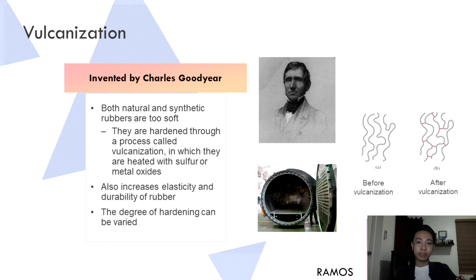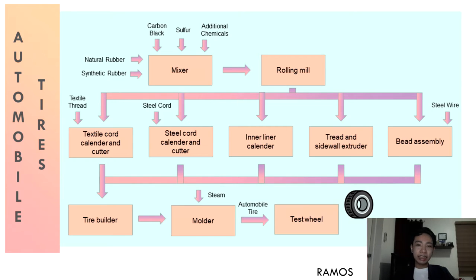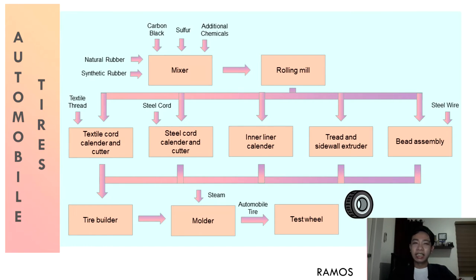The first step in the production of automobile tires is the mixing of raw materials. Both natural and synthetic rubber are used — natural rubber is the main component of the tread layers, while synthetic rubbers such as butadiene and styrene-butadiene rubber are used for other parts. As many as 20 different types of rubber may be used. Carbon black is added as a reinforcing agent to improve durability, and sulfur is used for vulcanization. Other chemicals are added to reduce wear and increase grip.